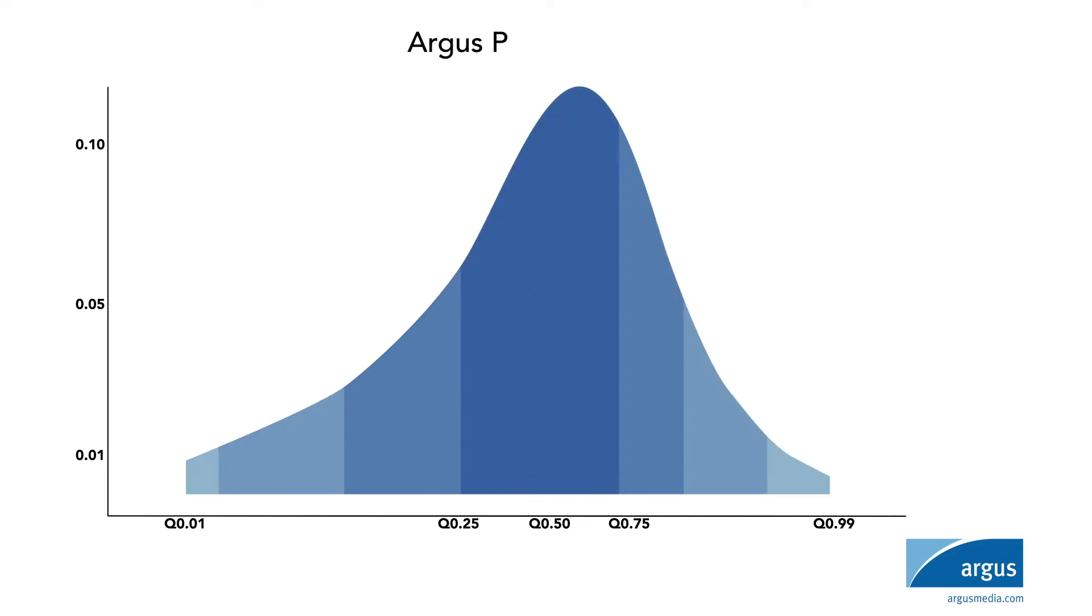To shape the Argus Possibility Curve, we need four parameters: location, dispersion, skewness, and kurtosis.